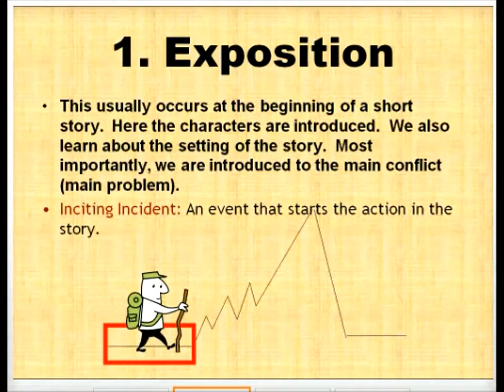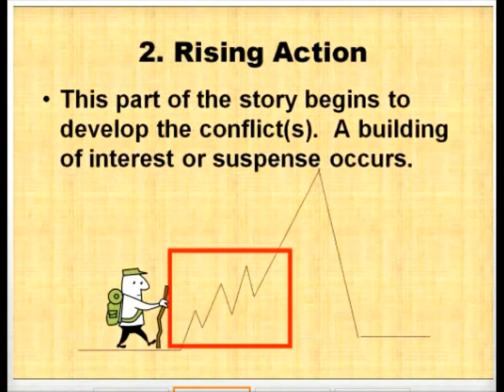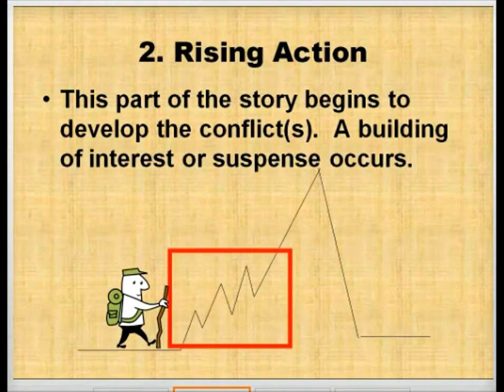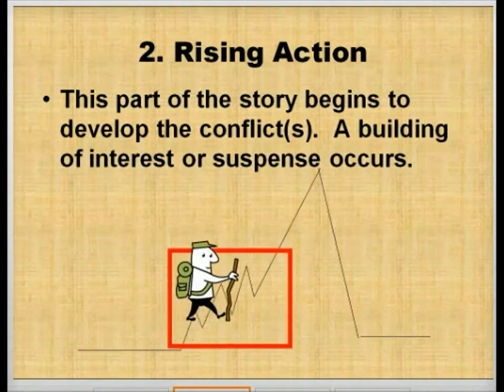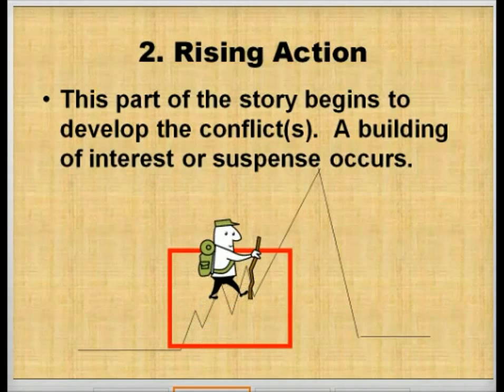Bob is starting his hike with the exposition. He's then going to move to the rising action. The rising action is the part of the story that begins the conflict. It can be a series of anywhere from 5 to 20 events that occur, but those events create a building interest or suspense that take you to the next step of the plot diagram, which is the climax.